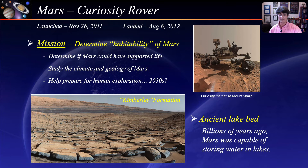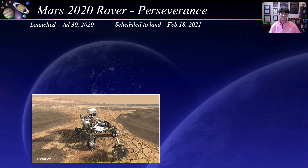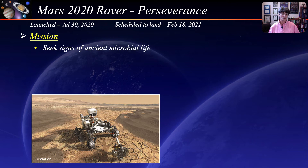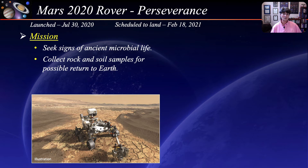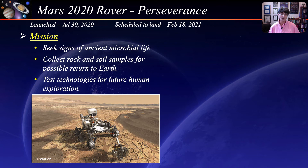The Mars 2020 rover, named Perseverance, was launched on July 30, 2020, and is scheduled to land on the planet on February 18, 2021. Its mission will be to search for signs of ancient microbial life, advancing NASA's quest to explore the past habitability of Mars. It will collect samples of Martian rock and soil, store them in sealed tubes for pickup by a future mission to ferry back to Earth for detailed analysis, and test technologies to help pave the way for future human exploration of Mars.